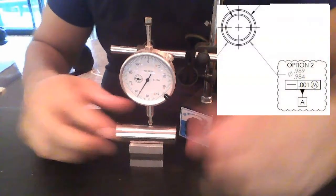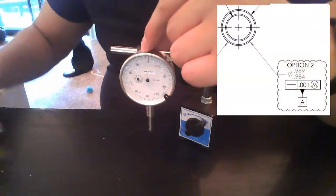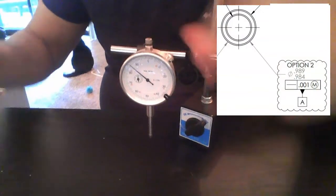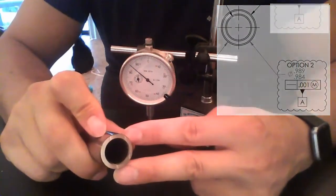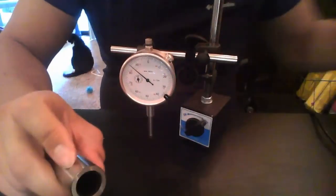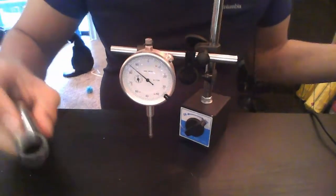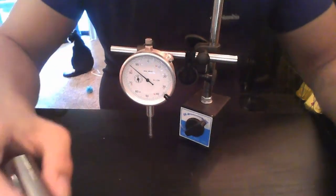Now, measuring straightness applied to a feature of size, such as the diameter of this outer cylinder, is entirely different. It will usually have a MMC modifier on it as well.